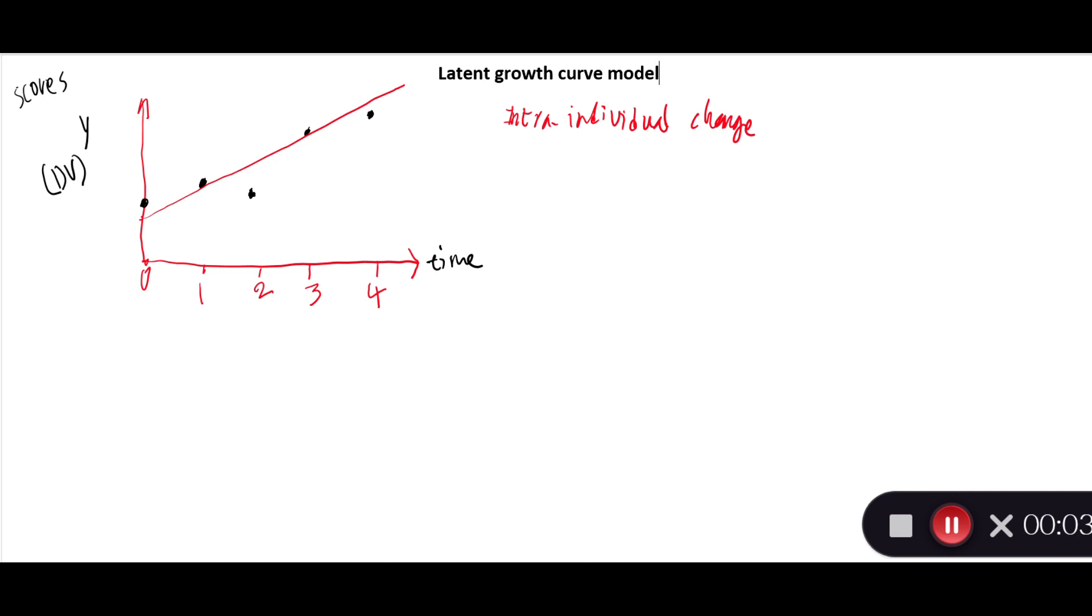Now how about another person? Let's assume there is another person who also participated in the same study, and he or she started by having a higher score here and relatively higher scores compared with this person. Therefore, the trajectory we can draw for this person is above. There is one conspicuous difference between this trajectory—let's call it trajectory two—and trajectory one.